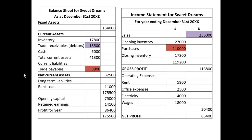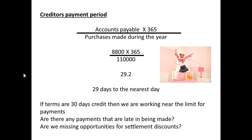Looking at the balance sheet and income statement for Sweet Dreams: the trade payables figure is 8,800 and the purchases figure is 110,000. Our creditors payment period — accounts payable divided by purchases times 365 — gives us 8,800 times 365 over 110,000, which is 29.2, or 29 days to the nearest day. This suggests we are basically paying those to whom we owe money at almost the last possible day. We might look at whether any payments have been made late and whether we're missing opportunities for settlement discounts.